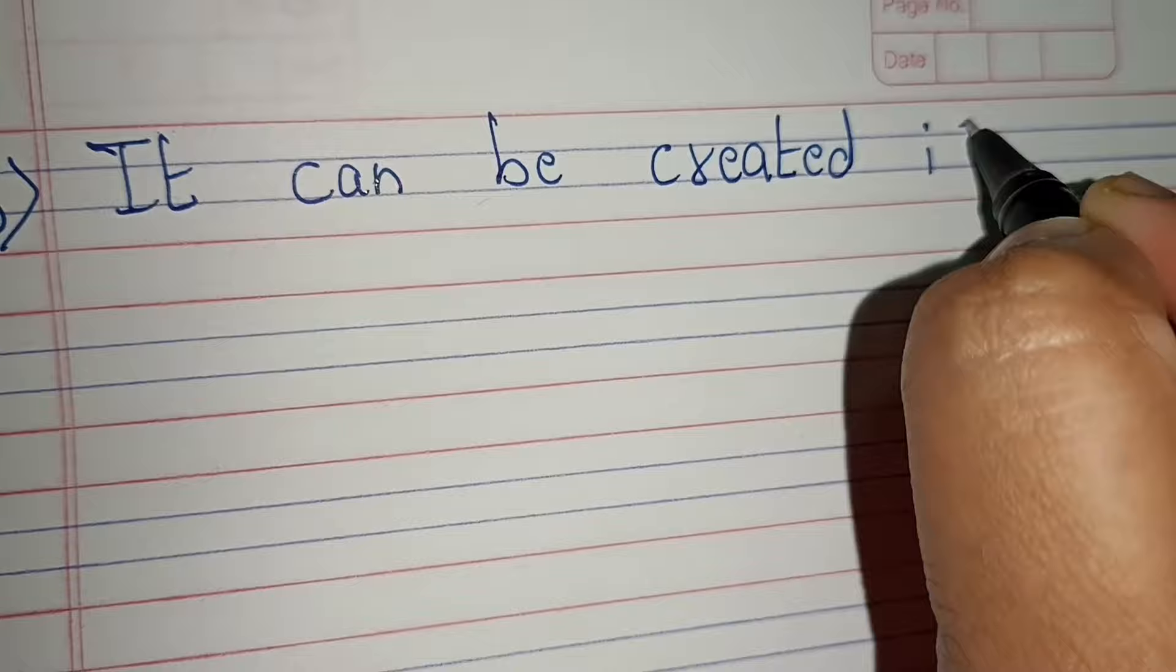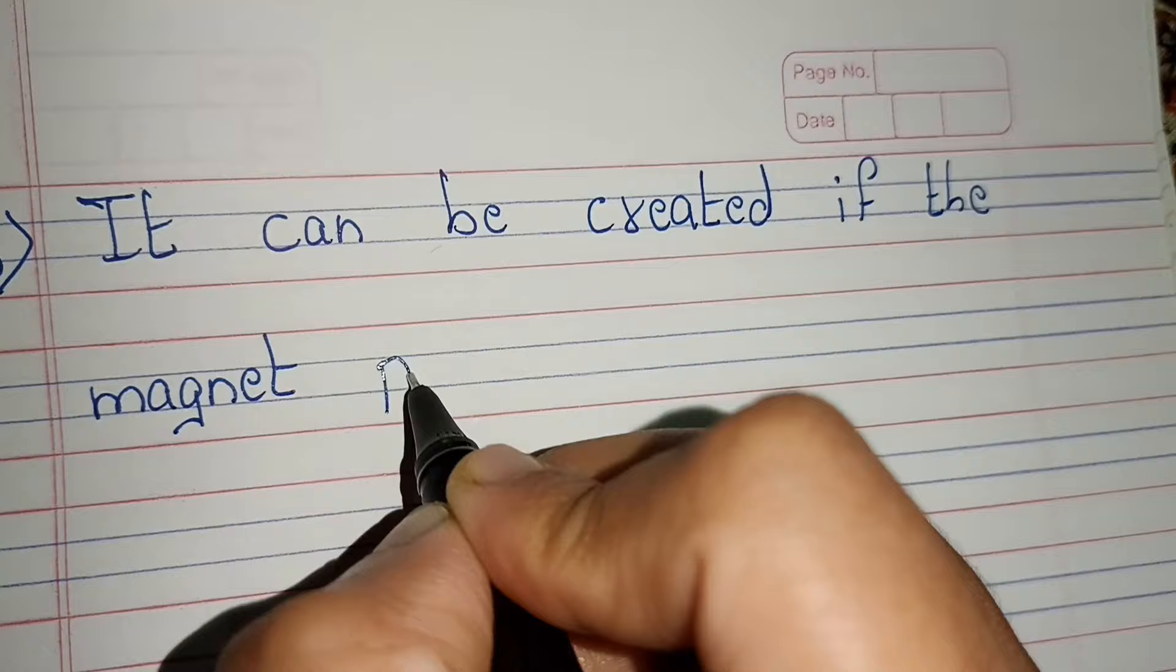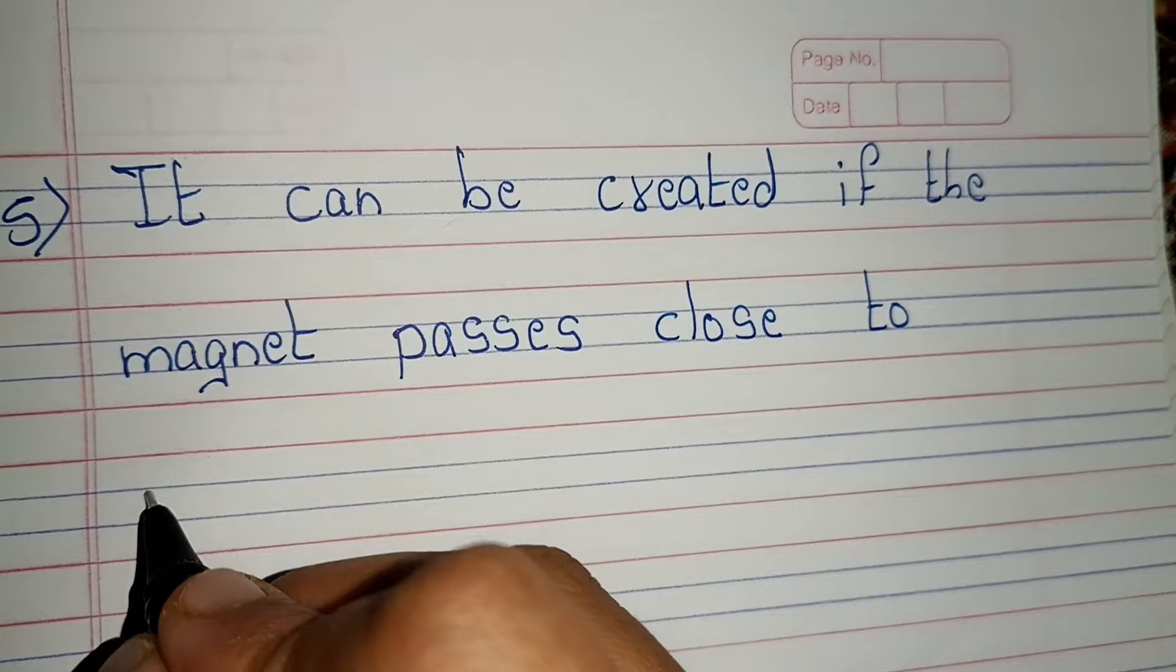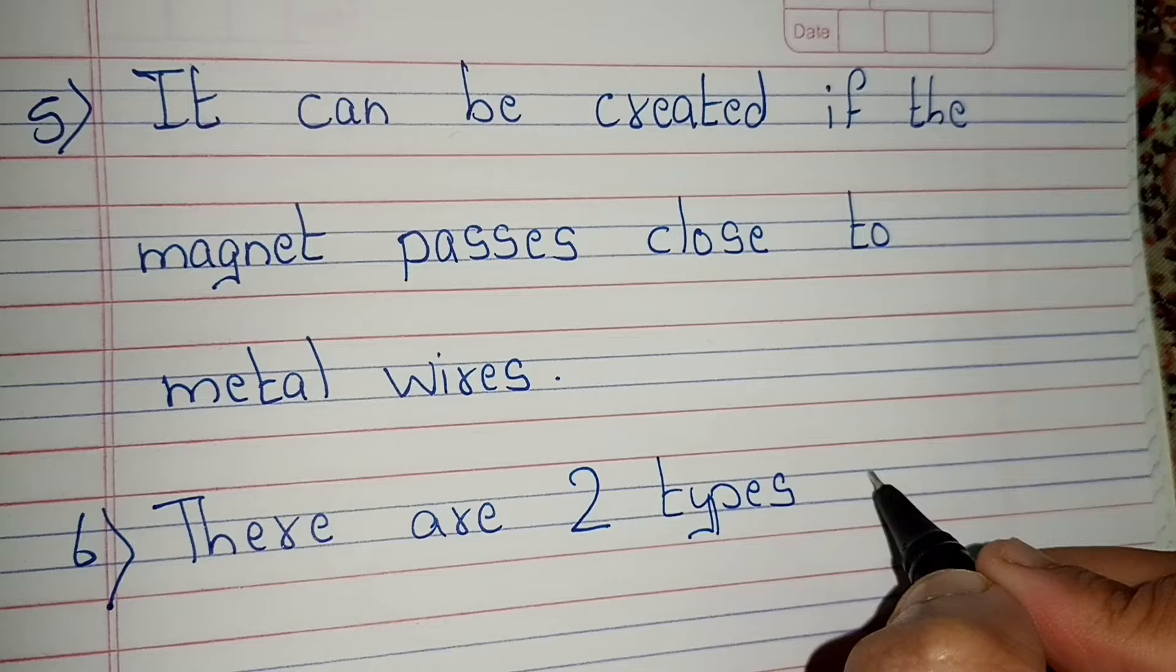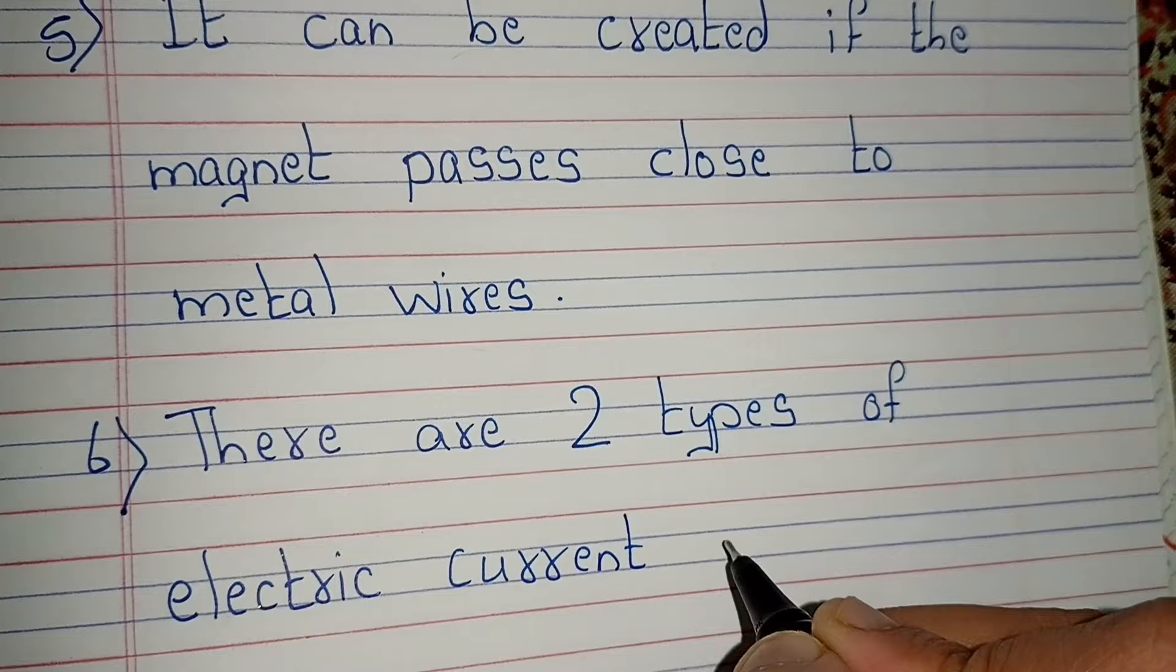It can be created if a magnet passes close to metal wires. There are two types of electric current: negative and positive charge.